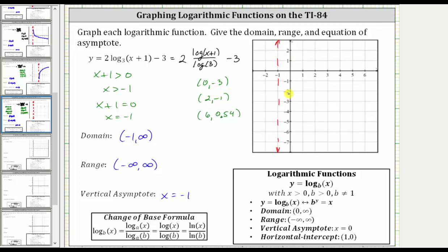So we have zero comma negative three, which is here, two comma negative one, which is here, and six comma approximately 0.54, which is approximately here. So we know the graph passes through these three points and approaches the vertical asymptote, and therefore the graph looks something like this.